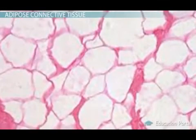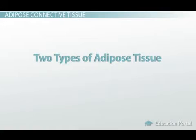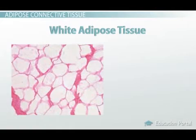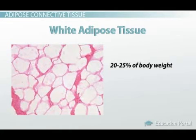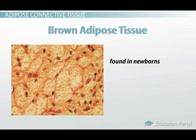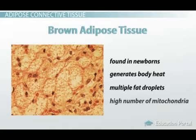The next time you're looking at a histology slide, look a bit closer — I'll bet you see some adipose tissue. There are actually two types of adipose tissue: white adipose tissue and brown adipose tissue. White adipose tissue accounts for about 20-25% of a healthy, non-overweight human's body weight, and is used as an energy source. White adipose tissue consists of a single fat droplet. Brown adipose tissue is found in newborns and in hibernating mammals. This type of fat is used primarily to generate body heat so we don't shiver. Unlike white adipose tissue, brown adipose tissue has multiple fat droplets and a higher number of mitochondria, which give it its signature brown color.